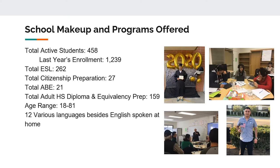We did not open back in person for the fall semester — all classes were online. In the spring semester, we attempted to open some in-person evening classes, but the numbers are much lower, about 28 students attending in person. Our ESL population is at 262, citizenship preparation at 27, ABE at 21 students, and our diploma and equivalency program at about 159. That's been a number we've seen increase compared to ESL, which has typically been almost 75% of our population — definitely a shift this year.